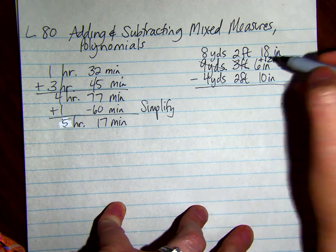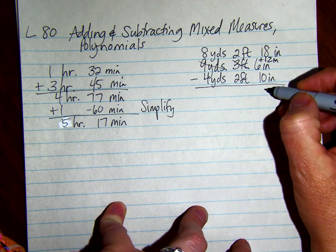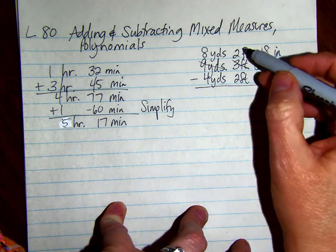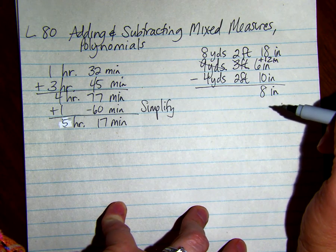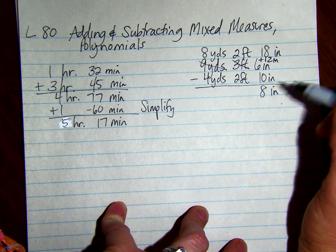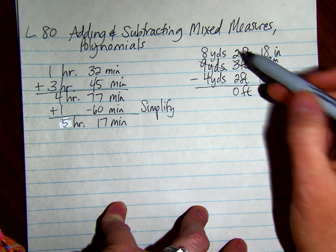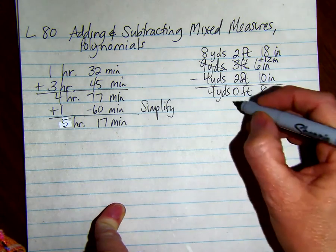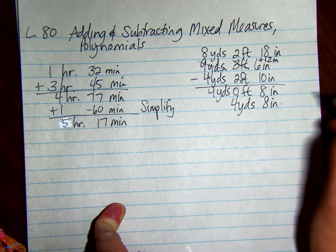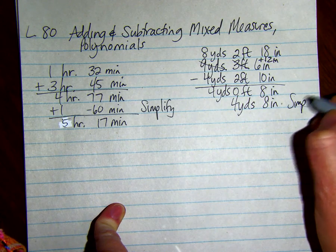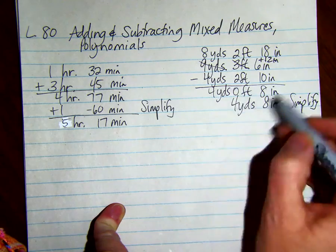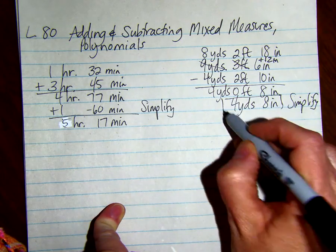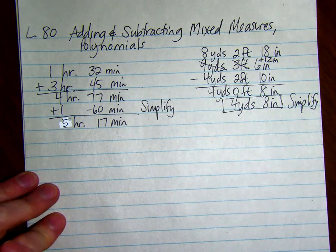Then we subtract. 18 minus 10 is 8 inches, 2 feet minus 2 feet is 0 feet, and 8 minus 4 yards is 4 yards. So when we subtract those two, we get 4 yards 8 inches. This is just to take away the 0 feet. We don't have to write the 0 feet in there.